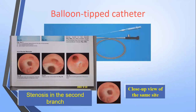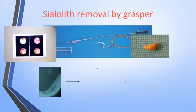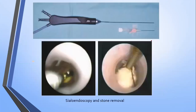With the help of a grasping wire basket, the salivary gland stone is removed. This picture shows how with sialendoscopy the stone was visualized and then removed using the grasper.